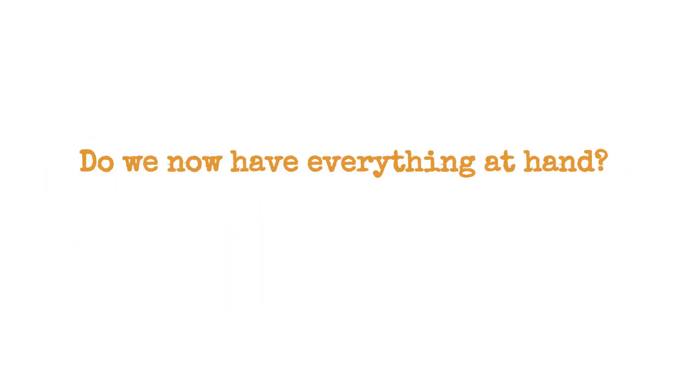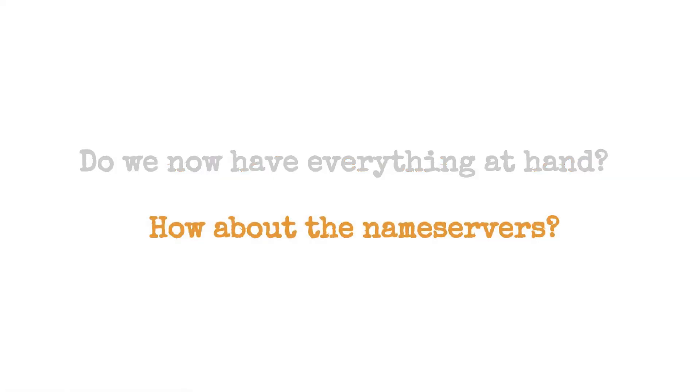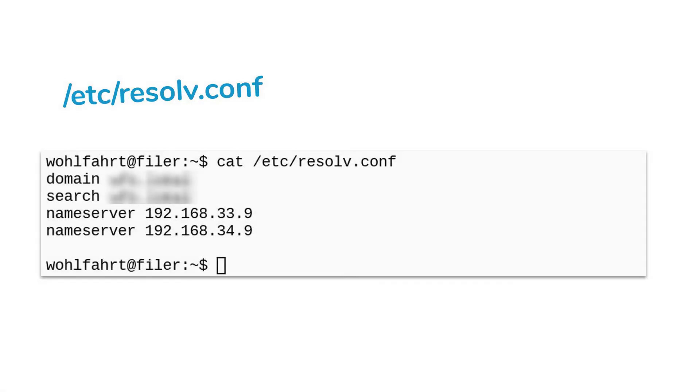Do we now have everything for the network configuration? Not quite — one piece is missing: the information about the name servers, the DNS servers. This information is located in the file `/etc/resolv.conf`. Pay attention: the word 'resolve' in the filename is written without the trailing 'e' — it is only r-e-s-o-l-v dot conf. This file may contain lines starting with the phrase `nameserver`, and these lines contain the IP address of the used name server.